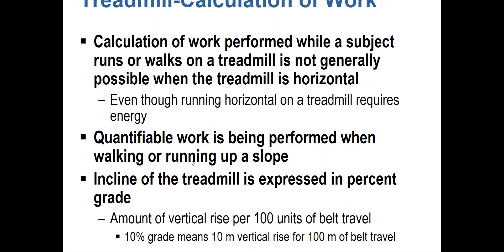However, if there's a vertical rise on the treadmill, we are considered to be traveling that vertical distance. Quantifiable work is being performed when the subject walks or runs up a slope. If the treadmill is at a 10% grade, that denotes a 10-meter vertical rise for every 100 meters of belt travel. Once we have that distance, we multiply it by the force of the individual — in most cases just their body mass — and then we can determine work.